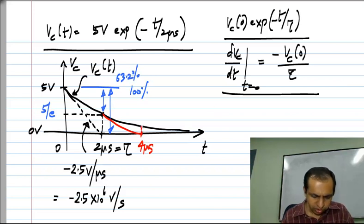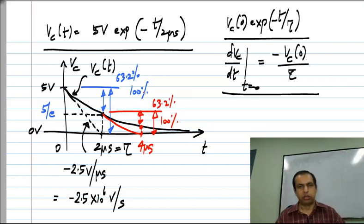Now, again if you look at how much it has gone down by, if you call this as 100 percent now, this part will be 63.2 percent. So, all these are basically saying in different words that what we have here is an exponential.